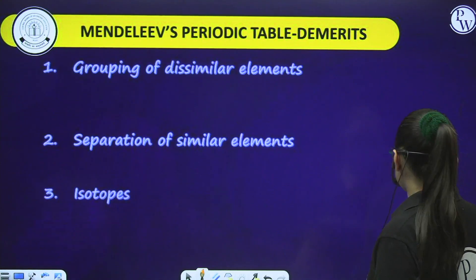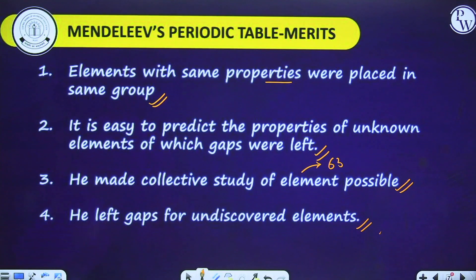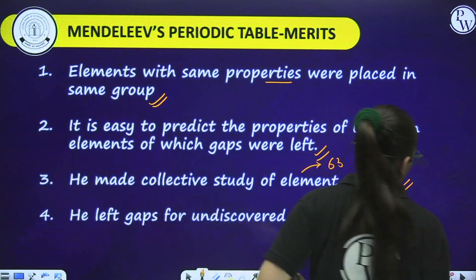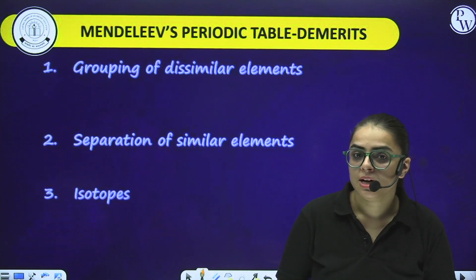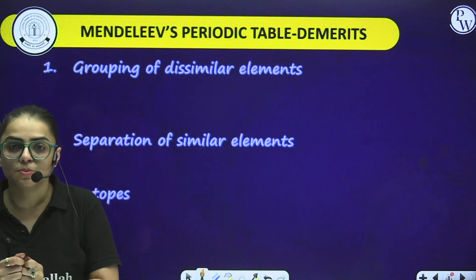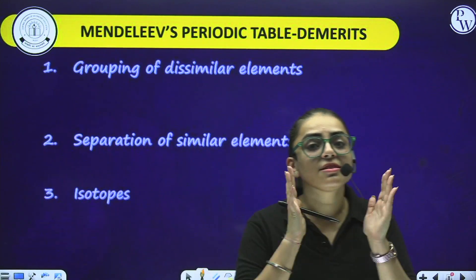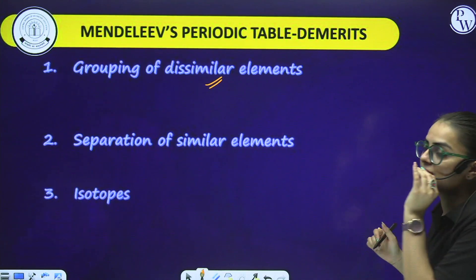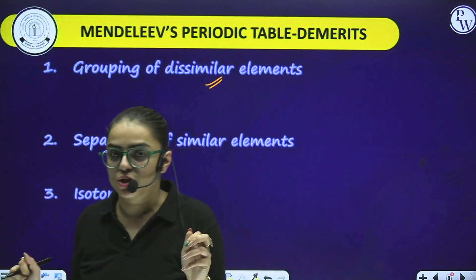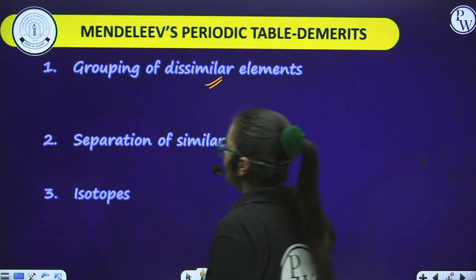Now come the demerits. Please write all four merits before we move on. First demerit: grouping of dissimilar elements - he grouped dissimilar elements together. For example, he grouped 1A with 1B together, though they had different properties. Second demerit: separation of similar elements - he separated same-kind elements and kept them at different positions. Third demerit: the issue of isotopes.